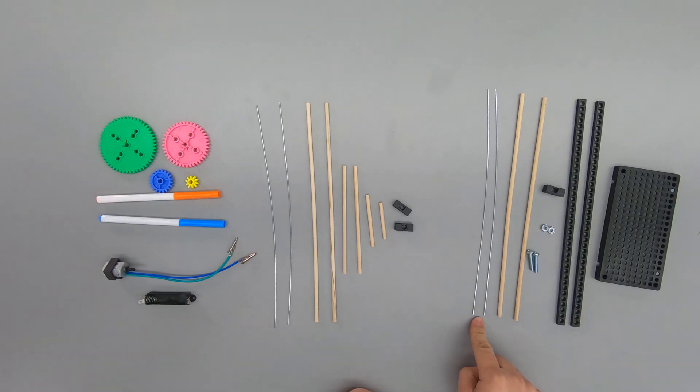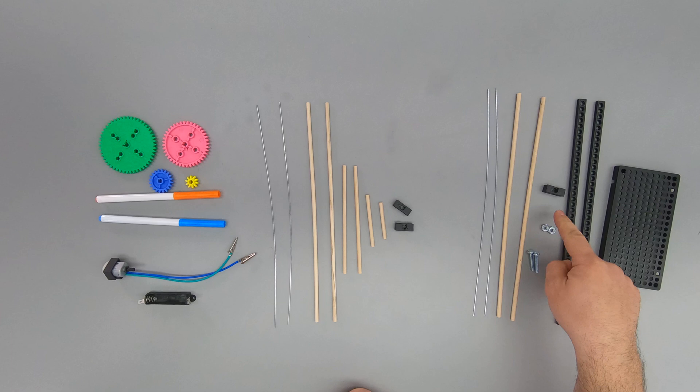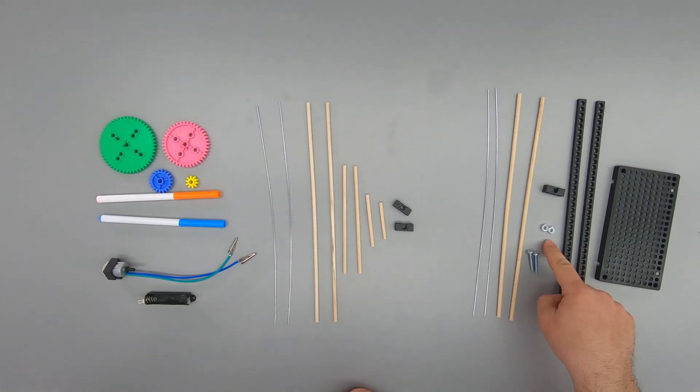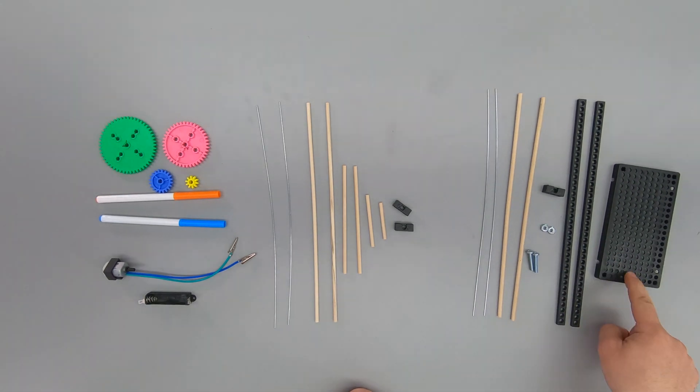If you got the Super WiggleBot kit, you got even more parts: two extra pieces of building wire, two extra dowels, an extra perpendicular block, two nuts, two screws, two connector strips, and a whole plate.